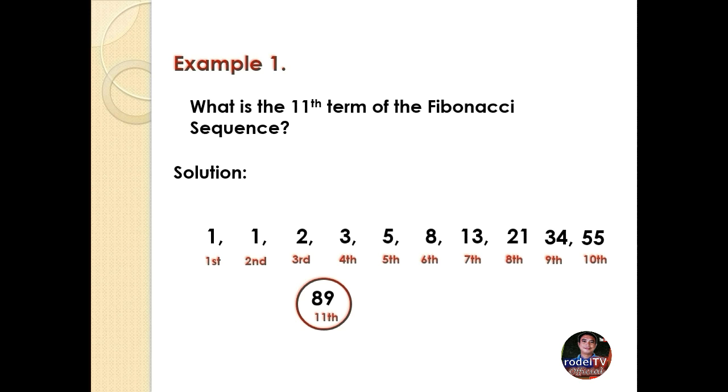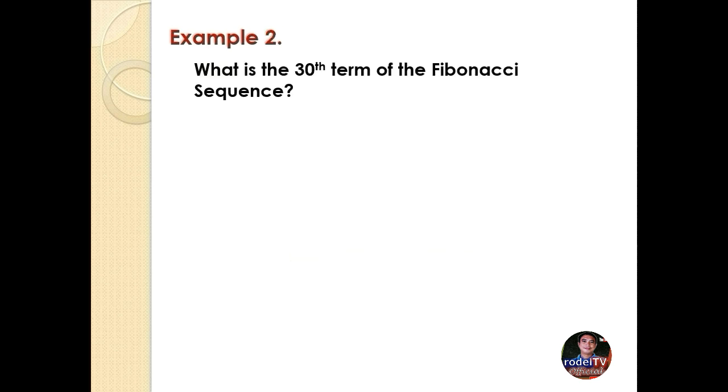But how about if we are asked for a distant term? Now let us consider our second example. Example 2: What is the 30th term of the Fibonacci sequence? Solution: In this case, since the problem requires a long solution and involves a very huge number, we need the help of the Binet's formula. First we identify the value of our n. In this case, since we are looking for the 30th term, our n is 30.